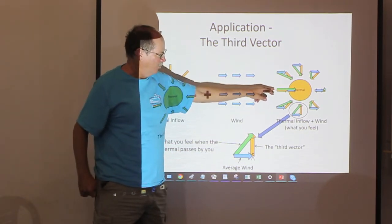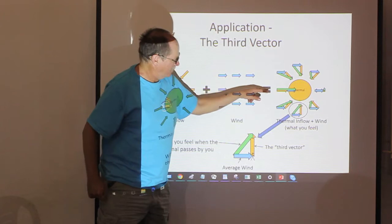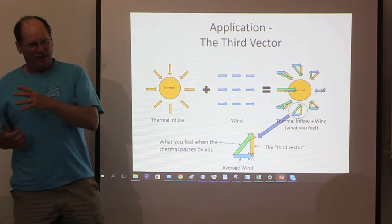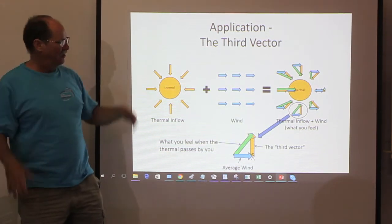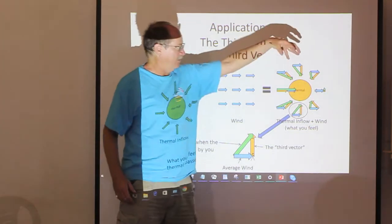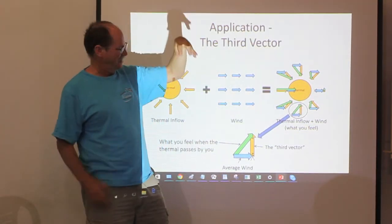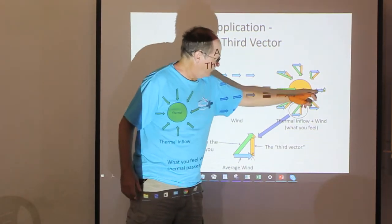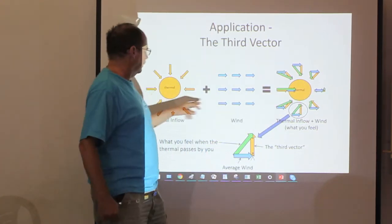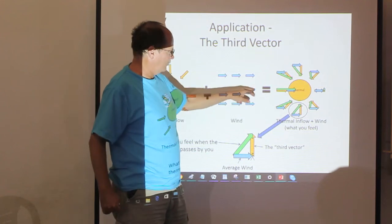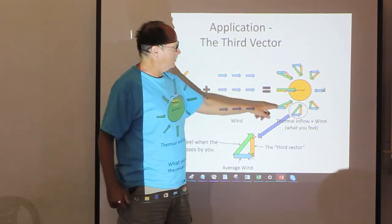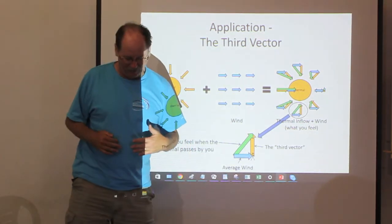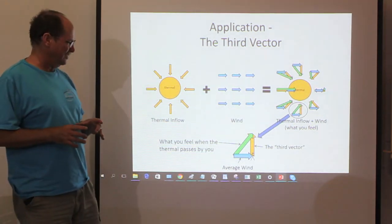If you were standing upwind of the thermal, what you feel is the average wind plus the air getting pulled into the thermal. If you're upwind of the thermal - i.e. the thermal just past you - you feel a big rush of wind blowing downwind. Or, as the thermal is coming towards you from upwind, you feel the wind almost stop and sometimes even reverse. What you're feeling is the green vector, the average wind is the blue vector, and what you're really trying to figure out is this yellow vector - because that's what the thermal influence is on the wind.